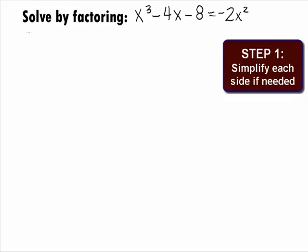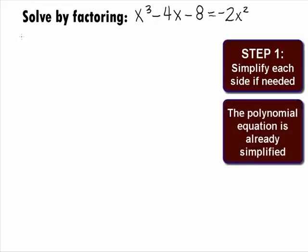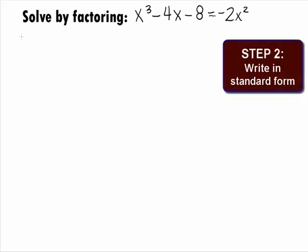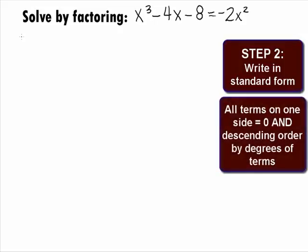In Step 1, we want to simplify each side if needed. Our equation is already simplified. In Step 2, we want to write this polynomial equation in standard form. This means we want to have all terms on one side set equal to 0 and write it with powers in descending order.